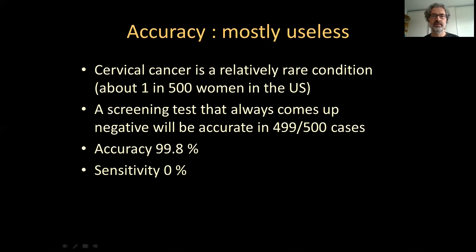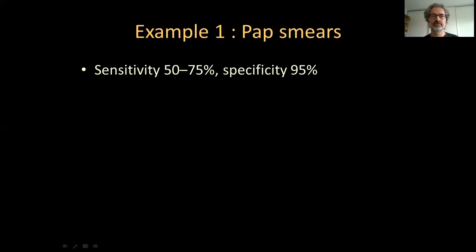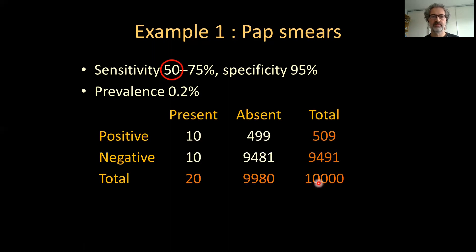Let's look at pap smears, which is the usual cervical cancer screening procedure. According to the literature, the sensitivity of this procedure is somewhere between 50 and 75%, and the specificity is about 95%. The prevalence of 1 in 500 is 0.2%. Using the worst-case scenario with sensitivity of only 50%: out of 10,000 women, 20 will have cervical cancer. The screening procedure at 50% sensitivity will detect 10 of them — so 10 will go undetected as misses. A specificity of 95% means that 95% of those without cancer will be correctly rejected.